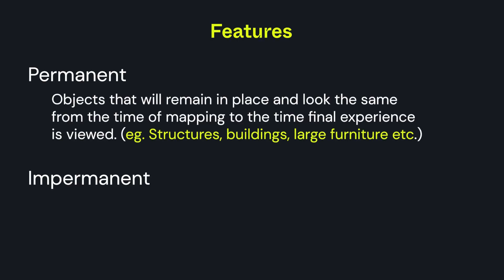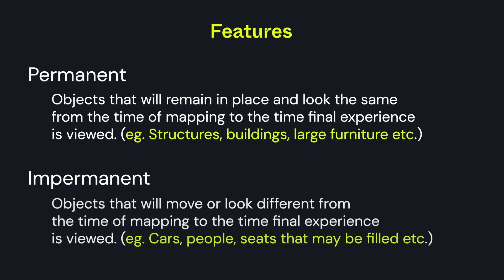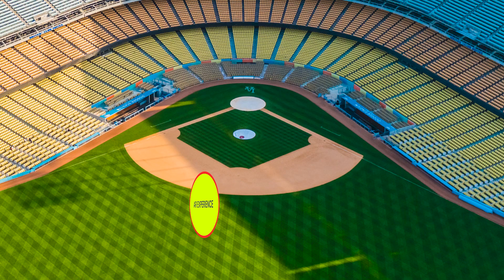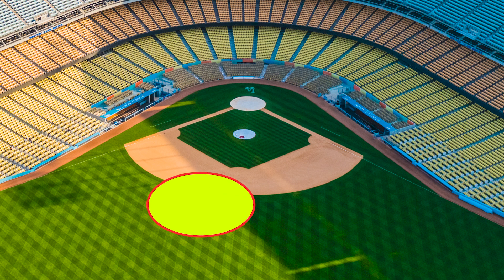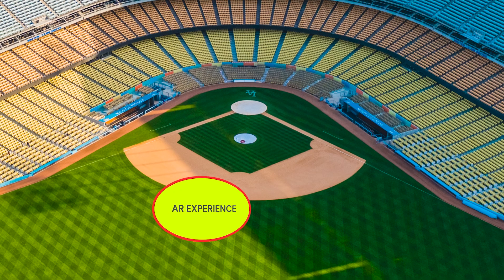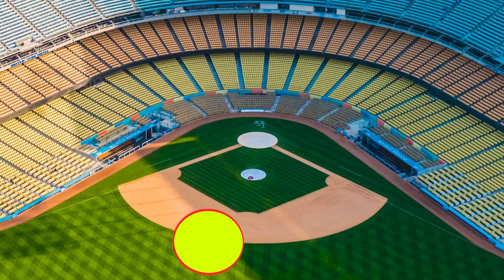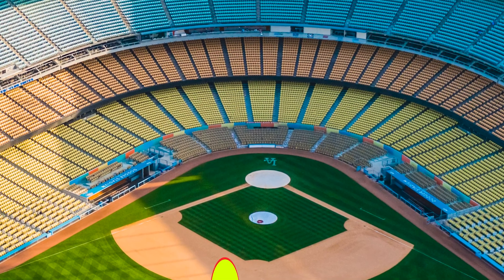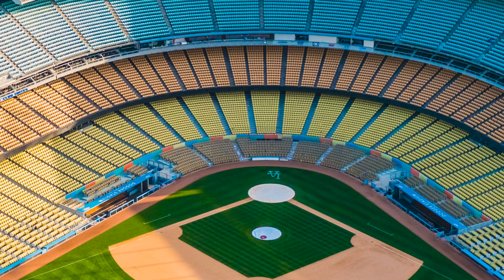3. Pay attention to unique features that are permanent. 4. Remember to map from the point of view of the end user. So in the example of a stadium, we would map from the seats.